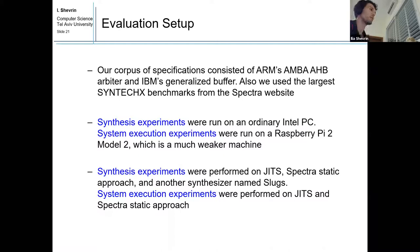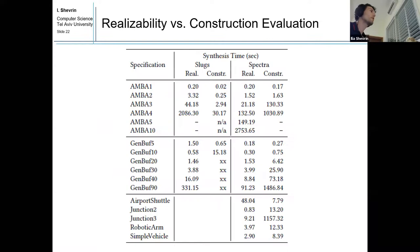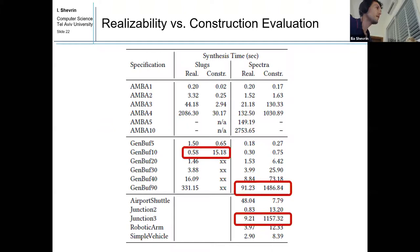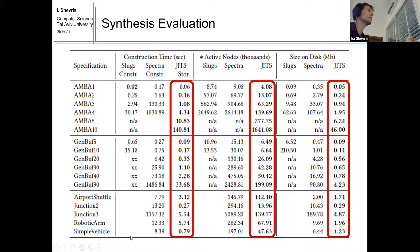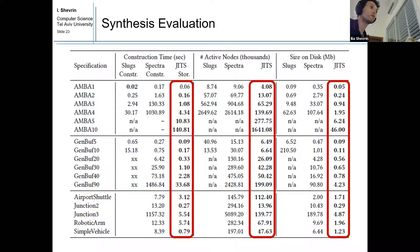For the first research question, we can see that in many cases construction takes considerably more time than realizability, with some extreme cases where more than 99% of synthesis time was spent on construction — shown for both Slag and Spectra. For the synthesis evaluation, JITS performs very well and outperforms both Slag and Spectra with regard to construction time, number of active BDD nodes, and size of the controller on disk, which is much lower for JITS.